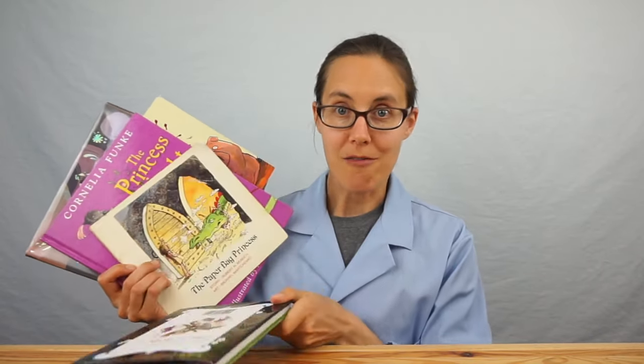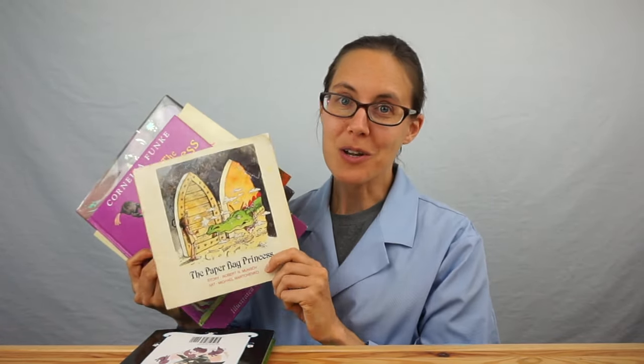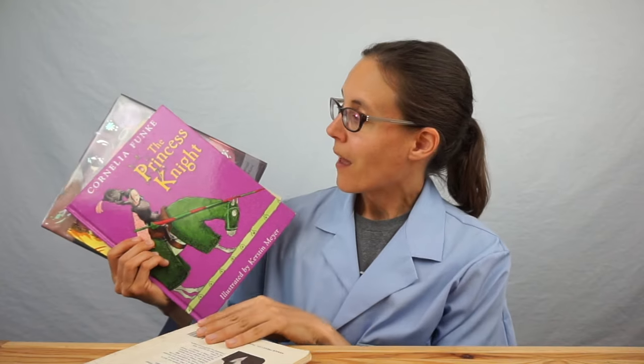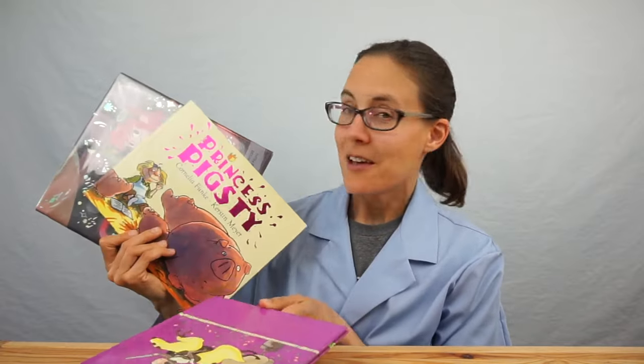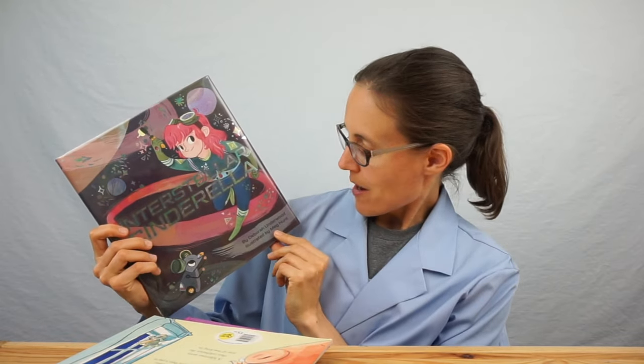So Princess in Black by Shannon Hale is wonderful. I love the whole series, but number three, The Hungry Bunny Hoard, is my favorite. And then The Paper Bag Princess by Robert Munch is a classic. I loved this book when I was a kid, and have enjoyed reading it with my own kids as well. I love Cornelia Funk, and her Princess Knight and Princess Pigsty books are wonderful. And Interstellar Cinderella by Deborah Underwood is fabulous as well. So if you haven't seen these before, check them out. They are all wonderful books. And that's it. Work hard. Grow smart. I'll see you next time.